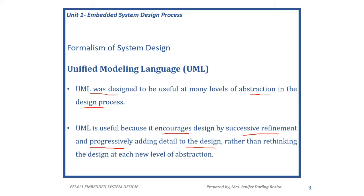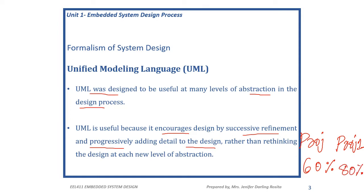What do we mean by successive refinement? This is a method used after the design is successfully done. Maybe after finishing your project, you may add a few components — that comes under the second level of the project. For example, the actual project may be efficient only at 60 percent, and through research you can add components to make it 80 percent efficient.